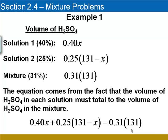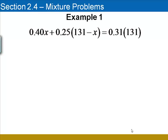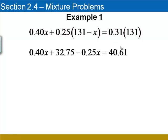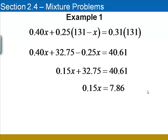We can now solve this equation with a little algebra. The first step is to distribute 0.25 on the left-hand side and at the same time multiply out the two numbers on the right-hand side of the equation. Once we've done this, we'll move on to combine like terms on the left side. 0.40X minus 0.25X leaves us with 0.15X. To isolate the variable term, we'll subtract 32.75 from both sides. And finally, to solve for X, we'll divide both sides by 0.15. And that gives us a solution of 52.4 for X.